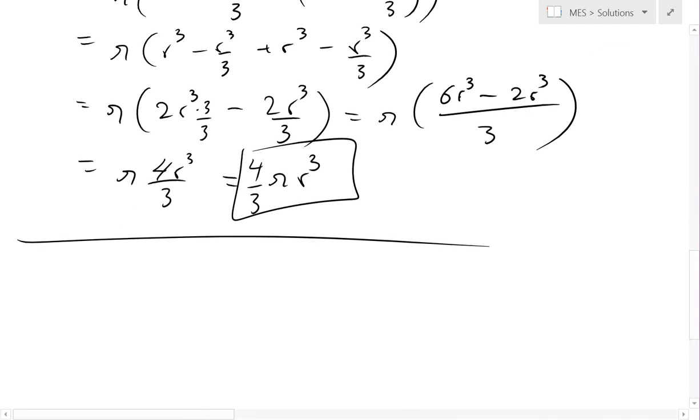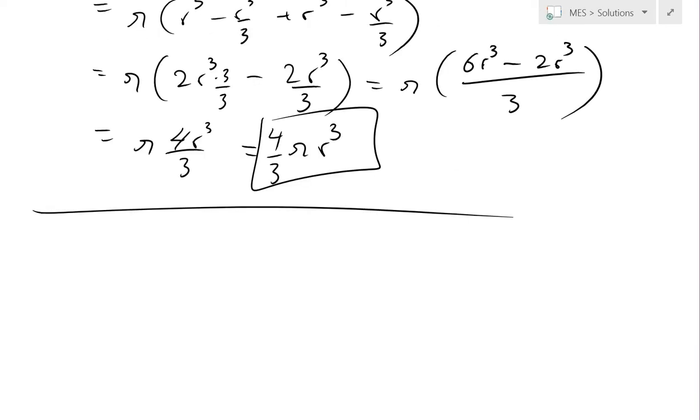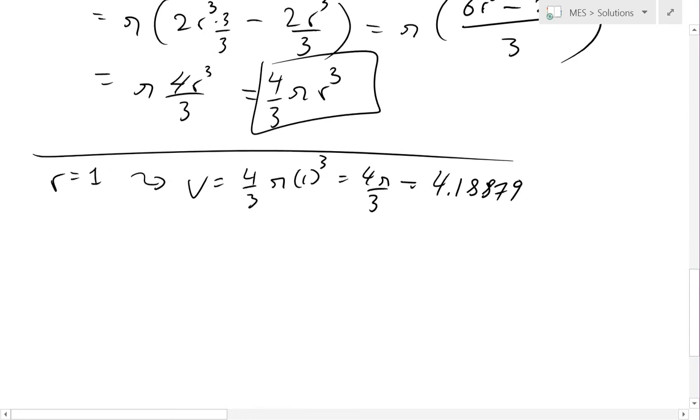Yeah, and this is basically what we're all familiar with, and that's pretty neat how we can solve this using calculus and integrals. So now if we had, let's say r equals to 1, or a sphere with radius 1, then the volume is equal to 4 over 3 pi times 1 cubed. That's just going to be 4 pi over 3, and you plug this into the calculator, we'll get something like 4.18879.